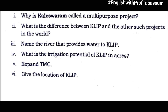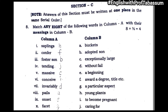So that was all about Section B. Now let's move to Section C. Match any eight of the following words in column A with their meanings in column B. I will directly give you the answer key: H, F, B, J, C, I, D, A, E, G. This is the answer key.